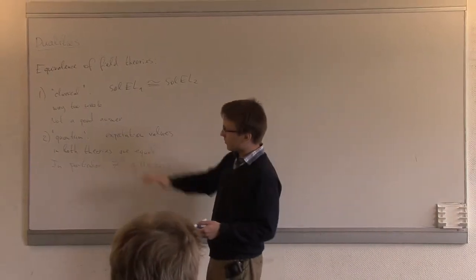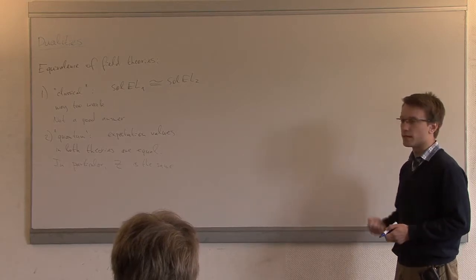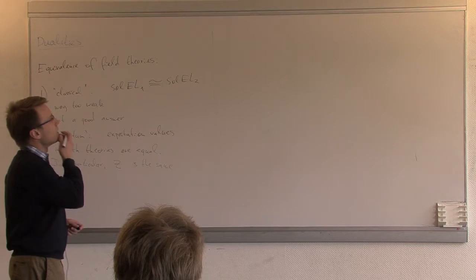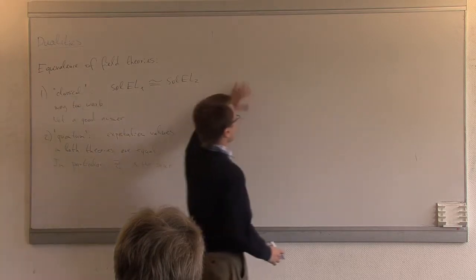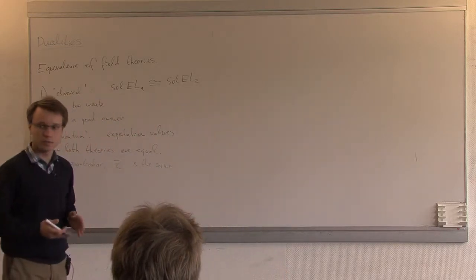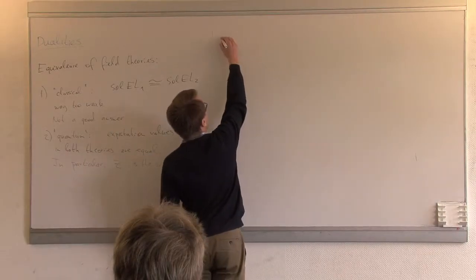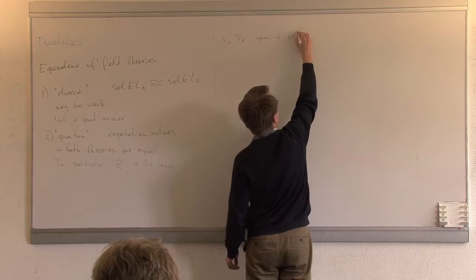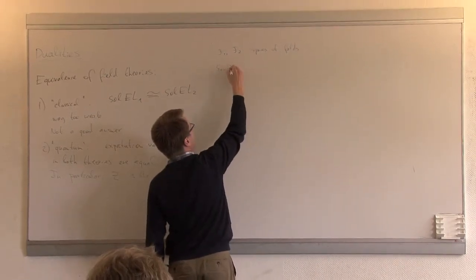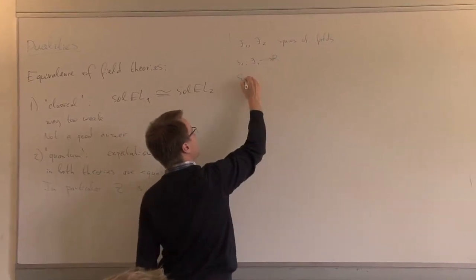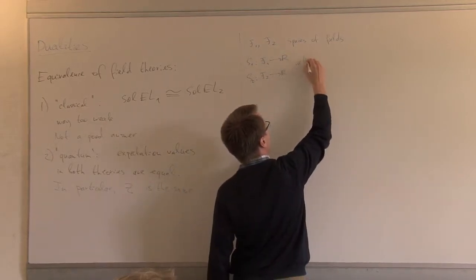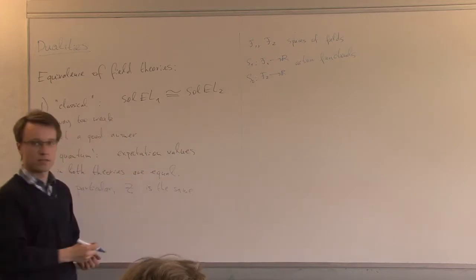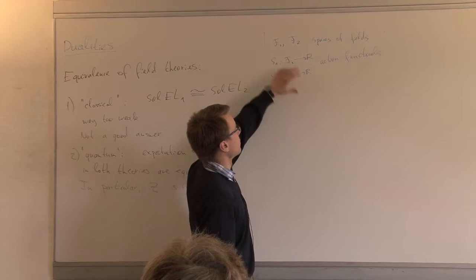Instead of going through the whole formalism of the path integral, I'll formulate axiomatically what it means for two theories to be the same and show that some field theories give examples of that. I'll list three types of equivalences between two field theories. Let's say you have F1 and F2, two spaces of fields, and S1 and S2 are the action functionals. What does it mean for the theory described by F1, S1 to be equivalent to the theory described by F2, S2?